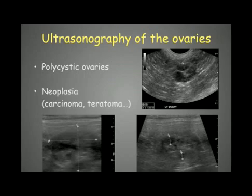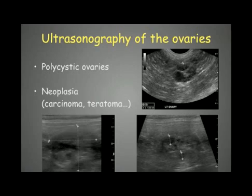In cases of persistent estrous, we will look mainly for polycystic ovaries, like we can see here, with multiple cysts visible. If the cysts are more than one centimeter, they are more suspicious for polycystic ovaries and not just the normal follicles of a normal estrous cycle. In general, we will see this condition bilaterally, so both ovaries will be affected.